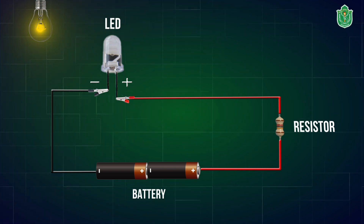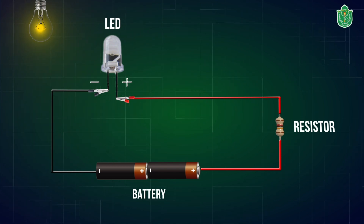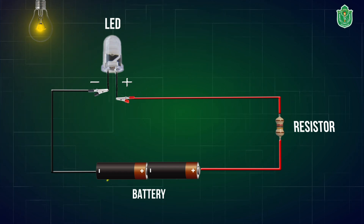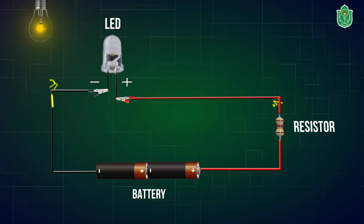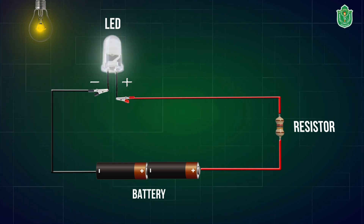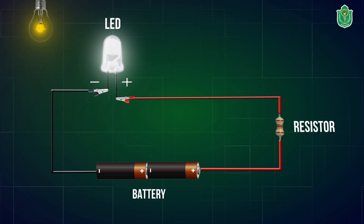Now when the connections are secure and the arrangement is fully done, you will see that the current will flow from the cell through the connecting wires and the LED will start glowing. So this will be our simple circuit in which we have used cells and an LED.